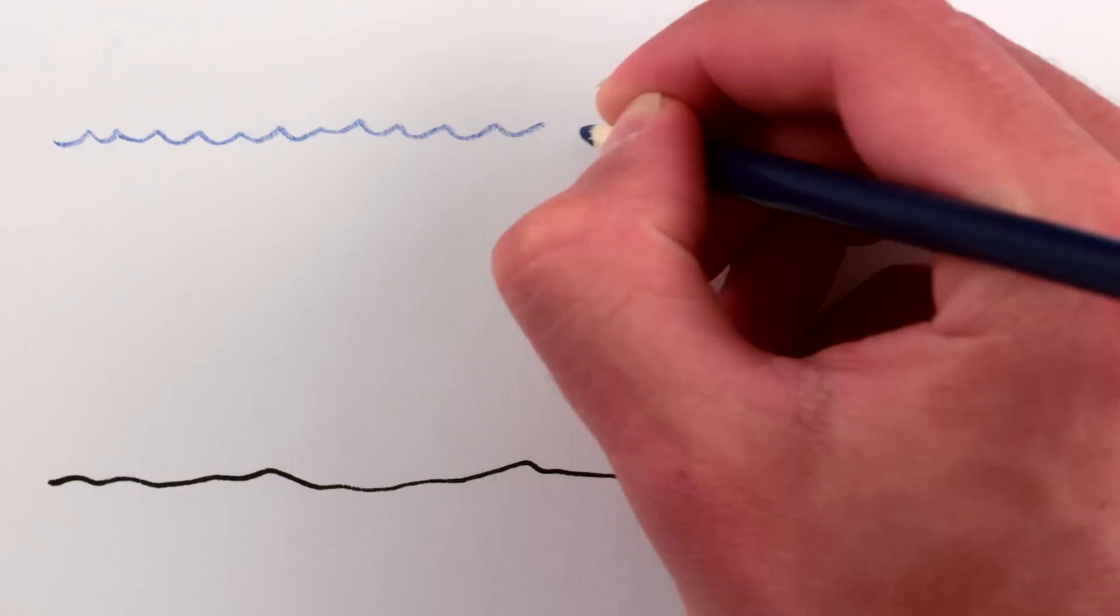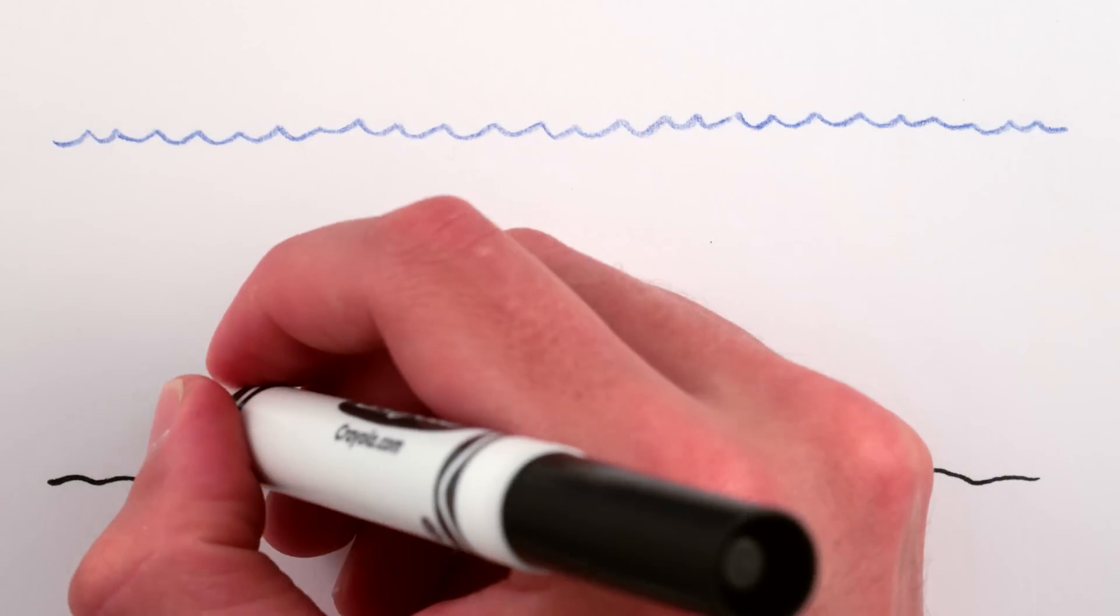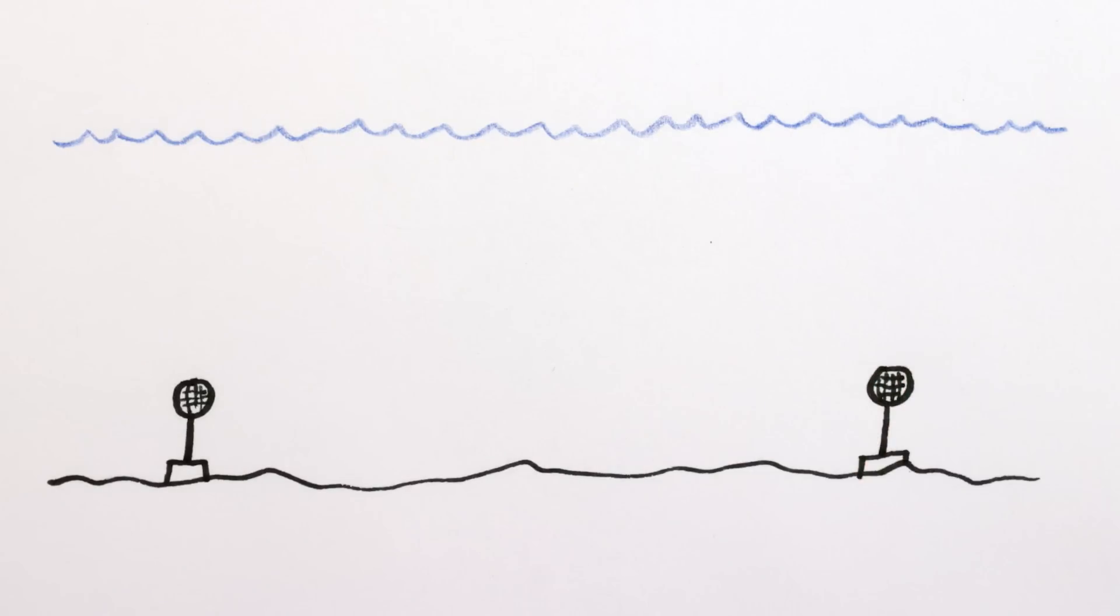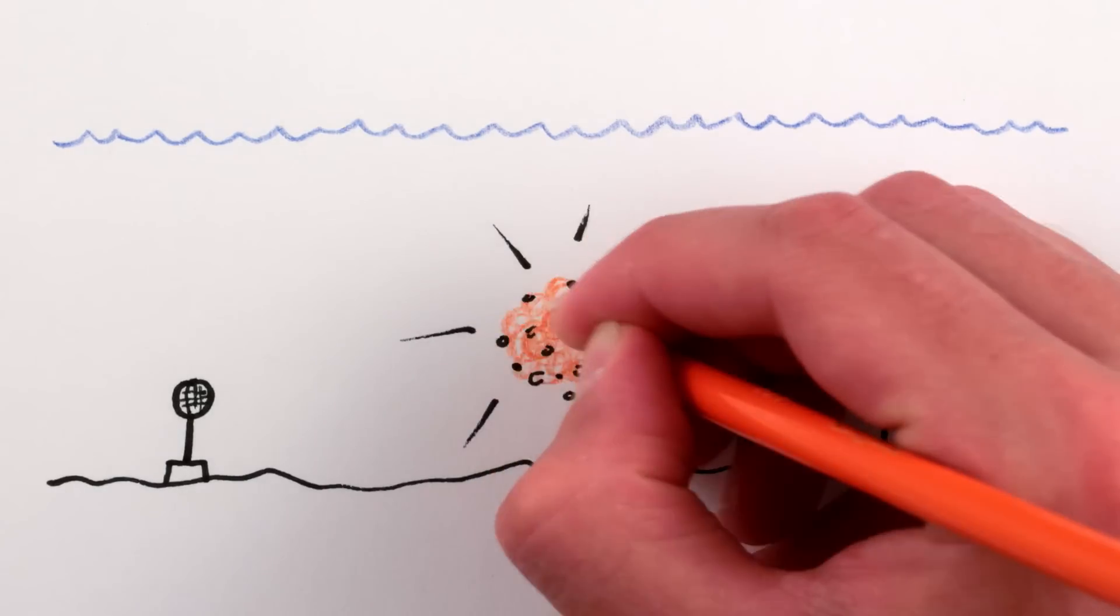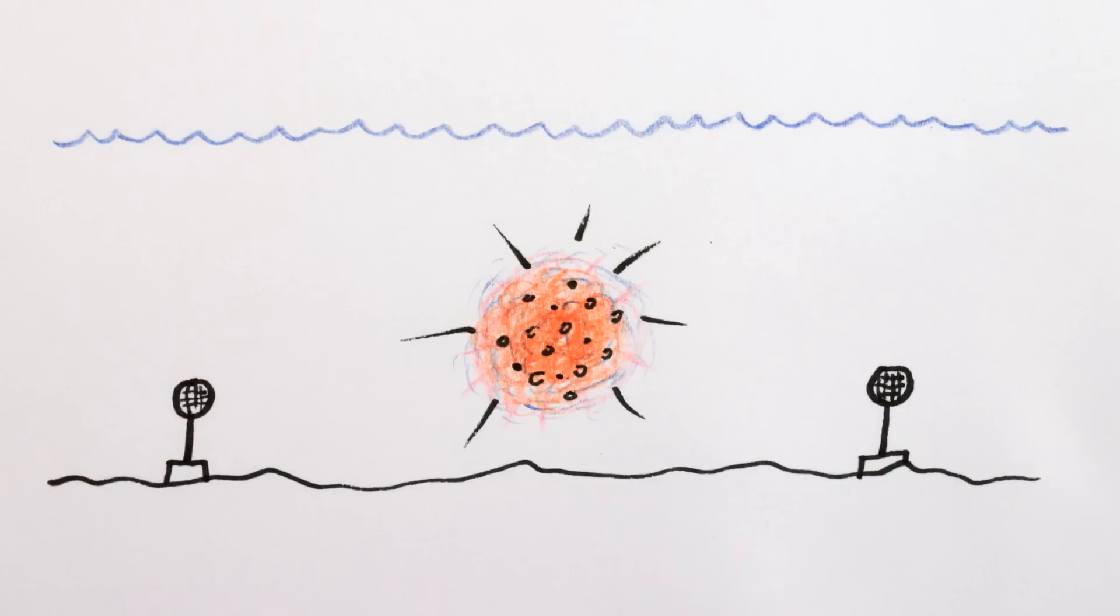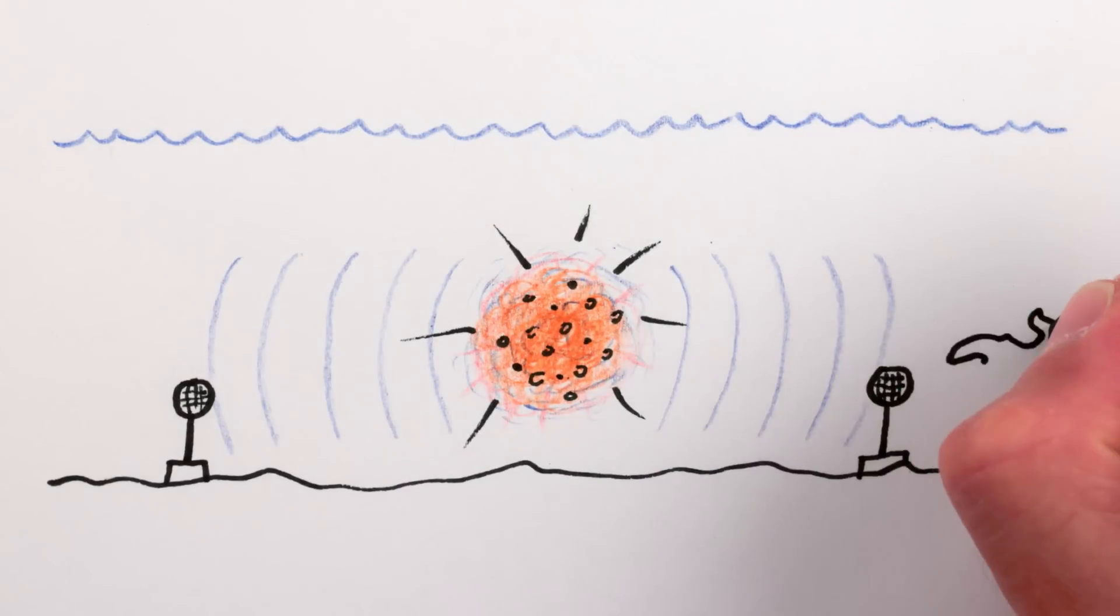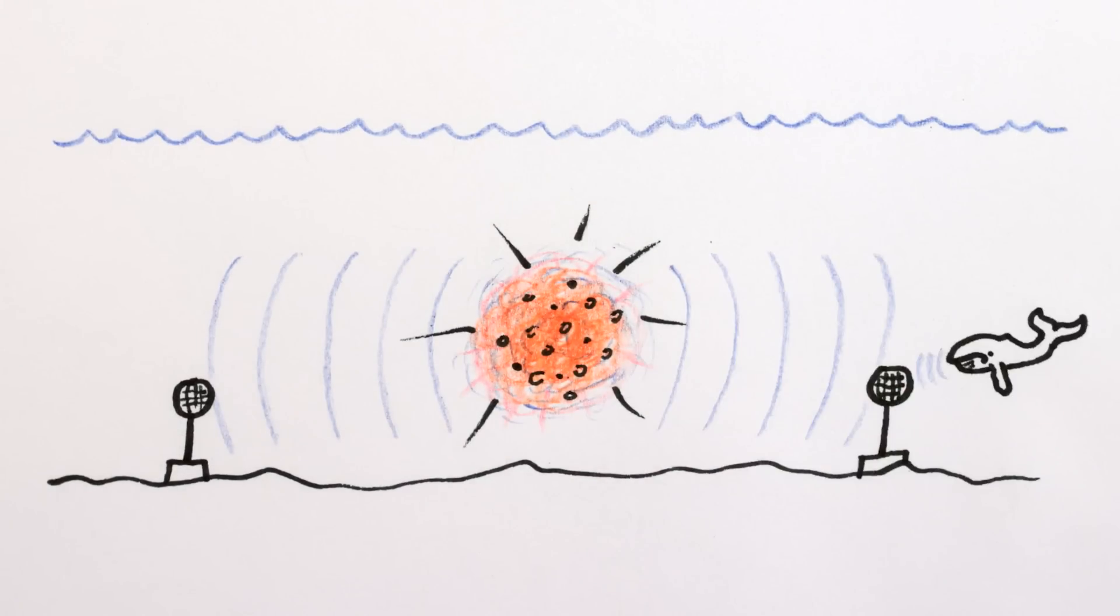Underwater detonations are monitored by hydroacoustic sensors, basically super-sensitive underwater microphones floating above the ocean floor. And like in the atmosphere, underwater nuclear blasts are pretty easy to detect because there's just nothing else that violent that happens in the oceans.